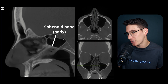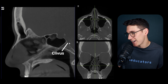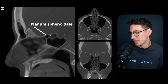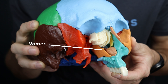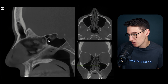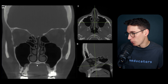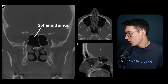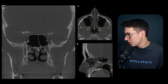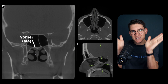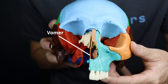The vomer extends from the body of the sphenoid bone. On the sagittal view we have the hypophyseal fossa, the clivus, the planum sphenoidale, and inferiorly the vomer extending down towards the palatine process. The vomer attaches to the sphenoid bone at the inferior sphenoid rostrum. On our coronal slice we can find the sphenoid sinus and see the rostrum, with the vomer extending to it and two small wings called the alae of the vomer attaching to the inferior surface of the body of the sphenoid.